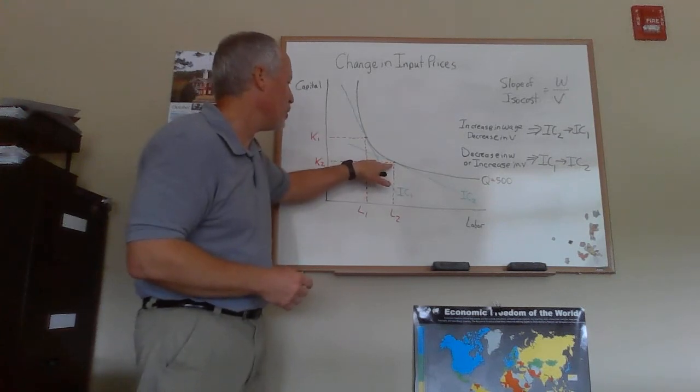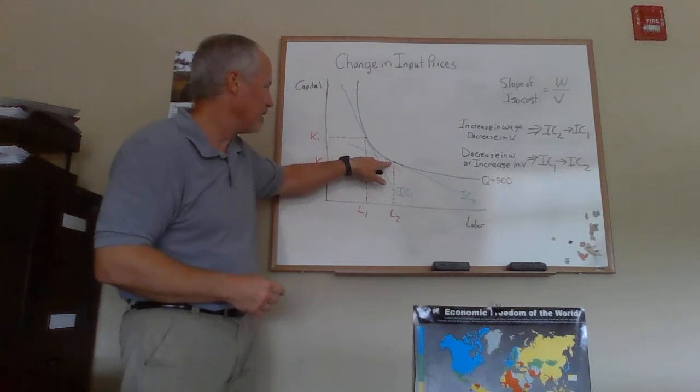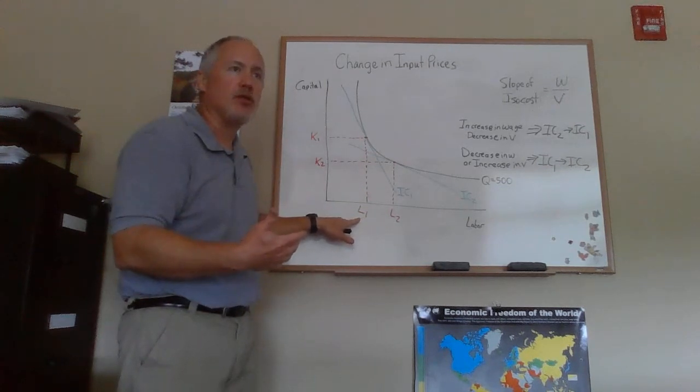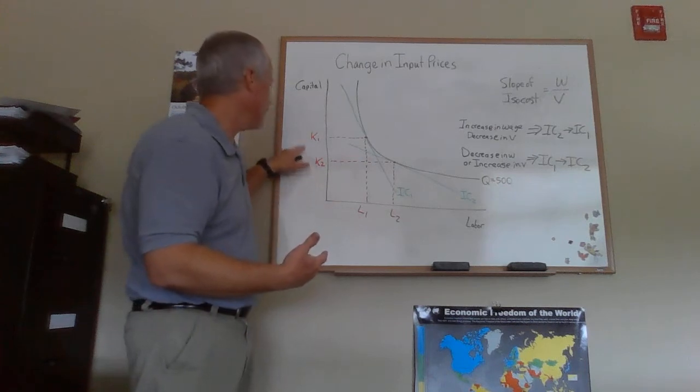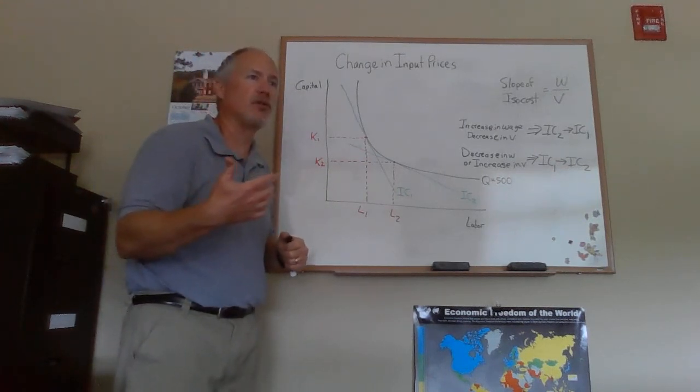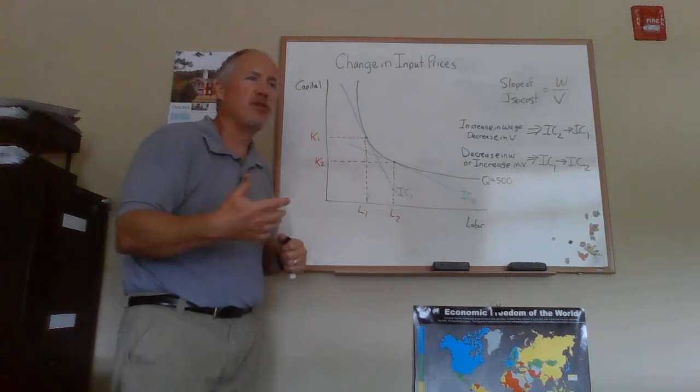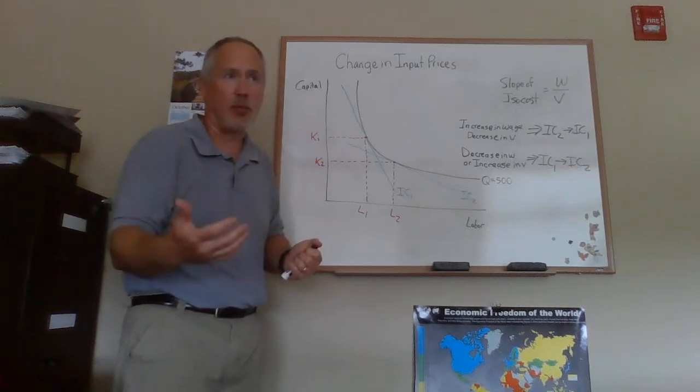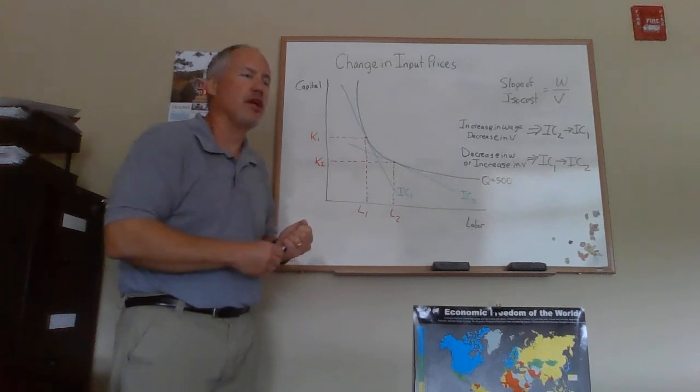So IC2 to IC1, the quantities of capital and labor involved are here and here respectively. So L2 to L1, you would use less labor. K2 to K1, you use more capital. So the wage of labor goes up, you substitute capital for labor, using less labor. You can conserve on the use of labor because that's now more expensive and try to use capital more in production.